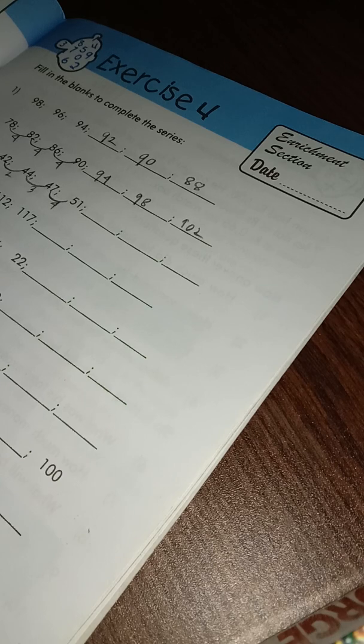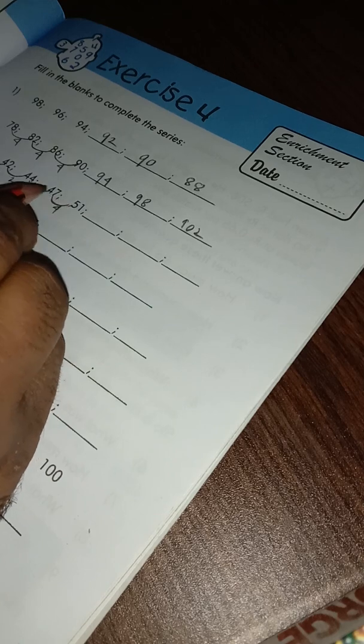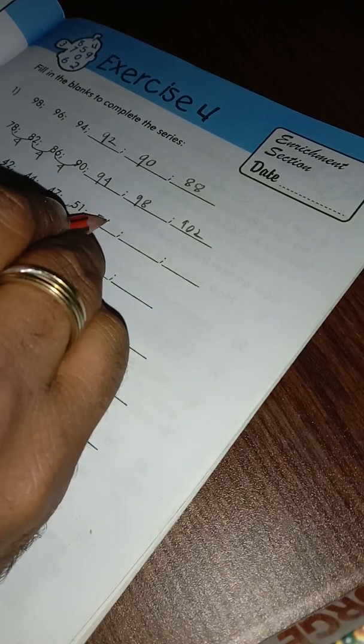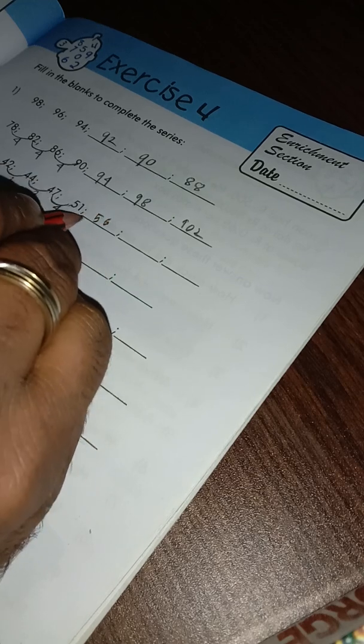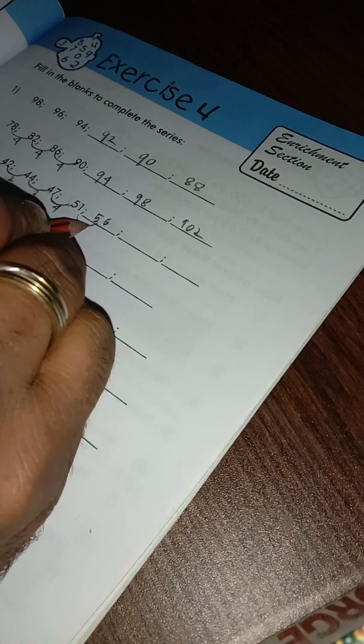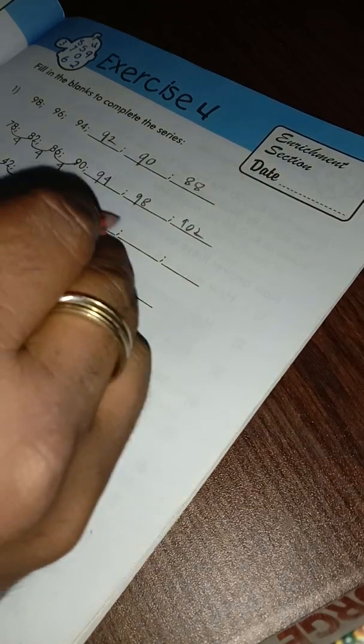56, here is difference 5. Now 56 plus 6, as this is 5 so we will increase one more, 6 is 62. Here is difference 6, so we will add 7 more, is 69.